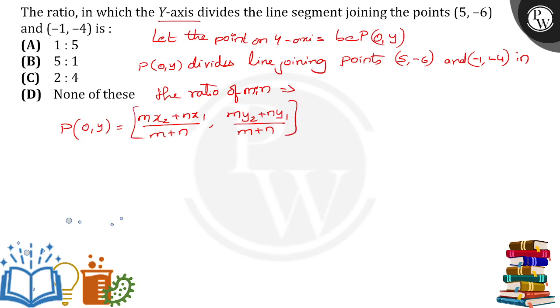So now by doing substitution, P 0 comma y is equal to, here this point is x1 y1 and this point is x2 y2, so m into minus 1 plus n into 5 by m plus n comma m into minus 4 plus n into minus 6 divided by m plus n.